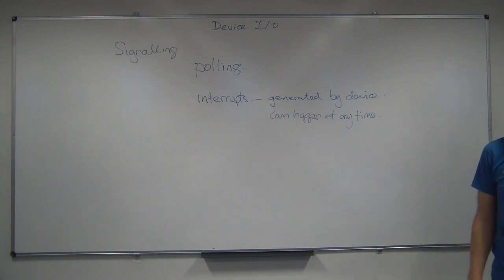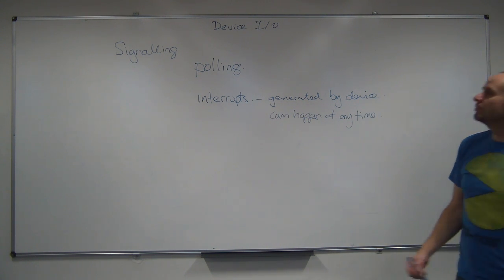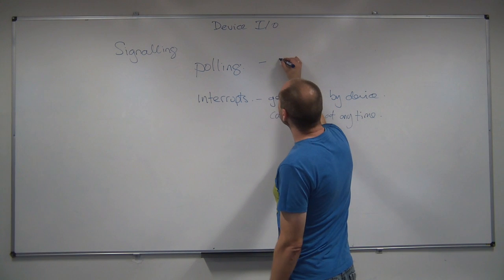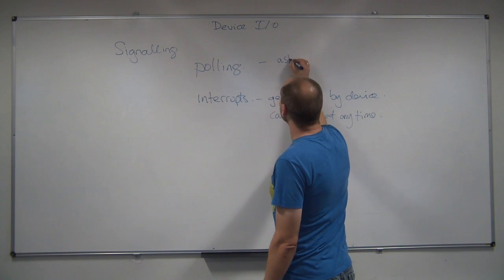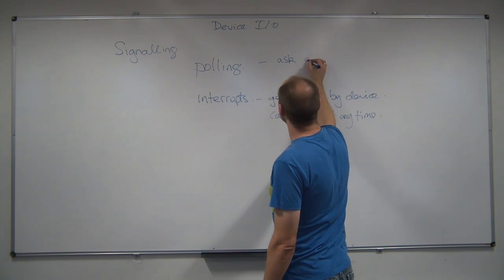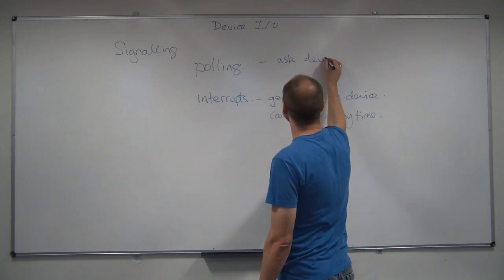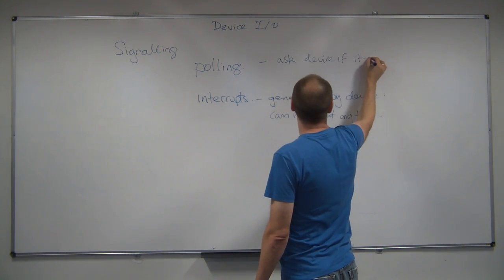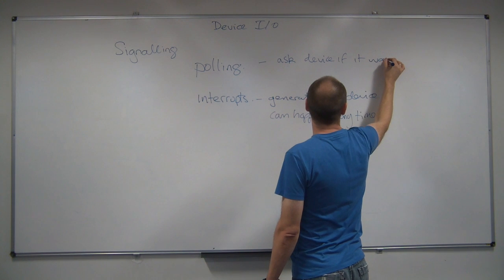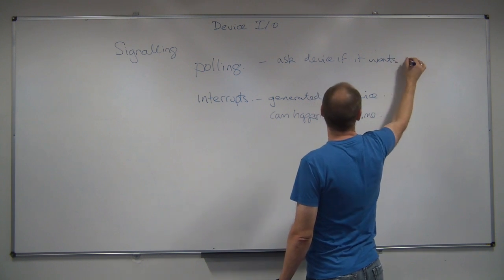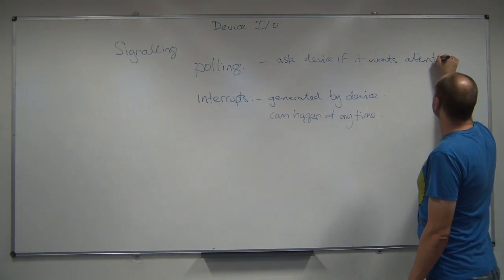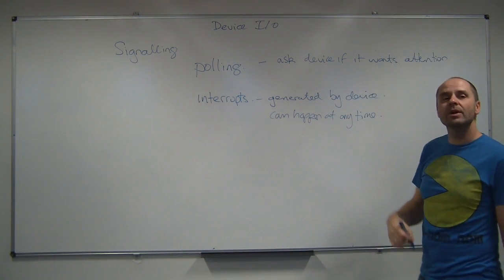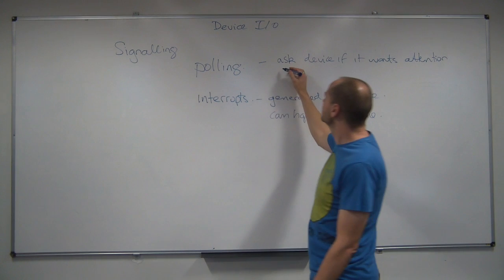Polling, on the other hand, is where we ask the device if it wants attention — we do it regularly.